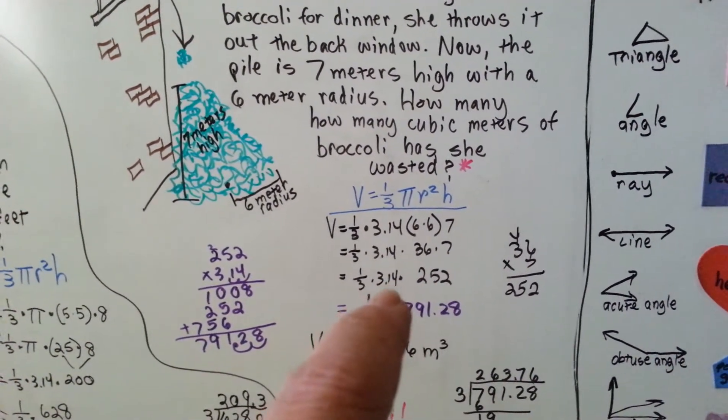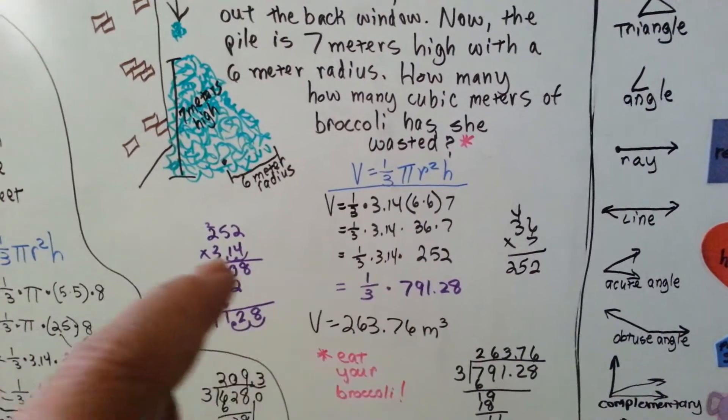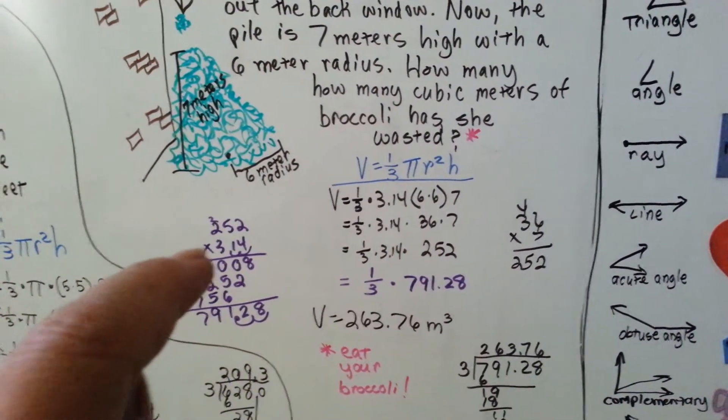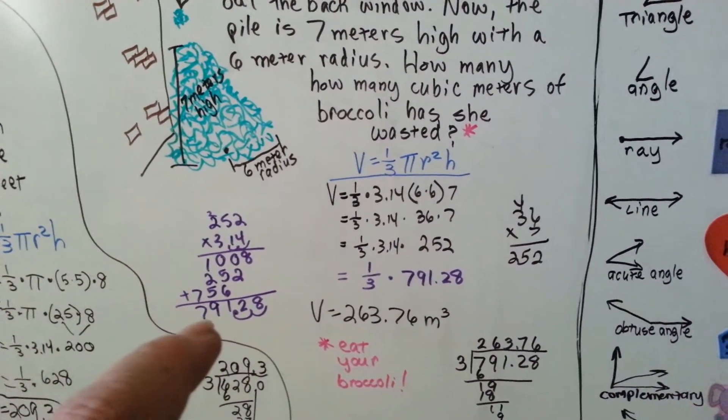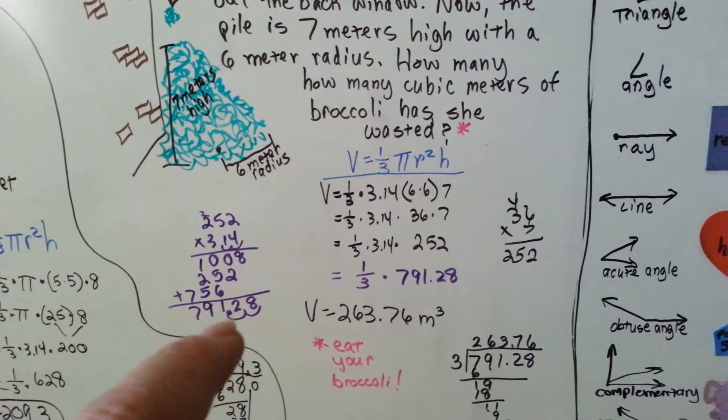Now, we're going to multiply that by the pi, 3.14. 252 times pi, 3.14. With all the math comes down to 791.28.